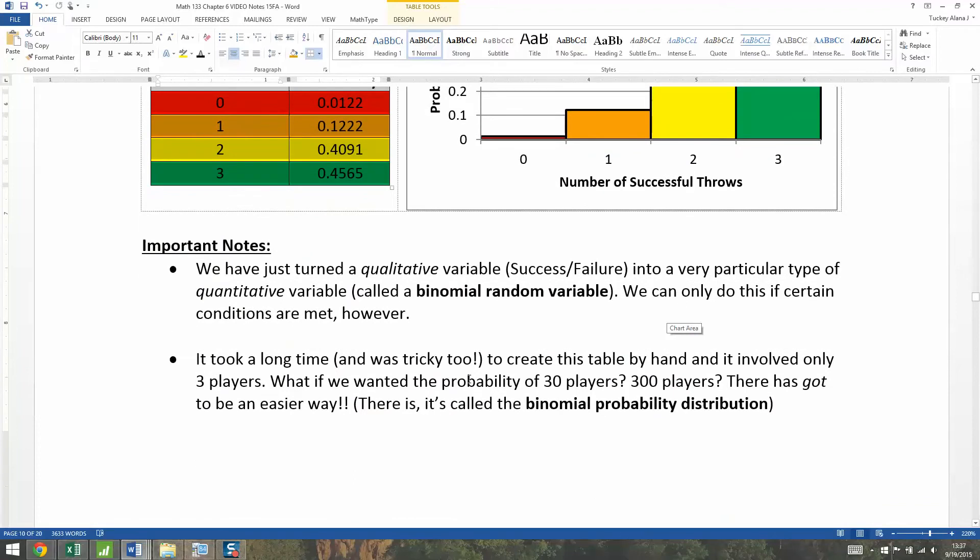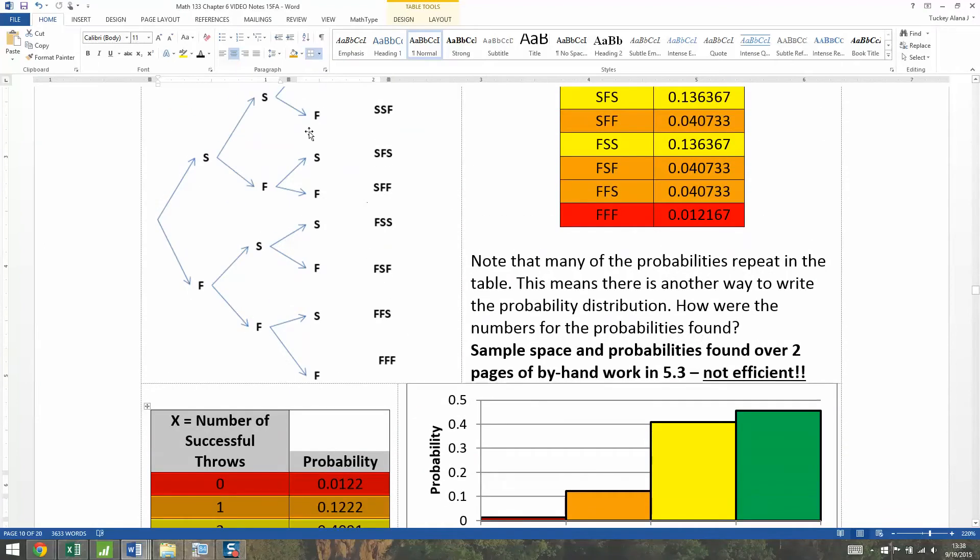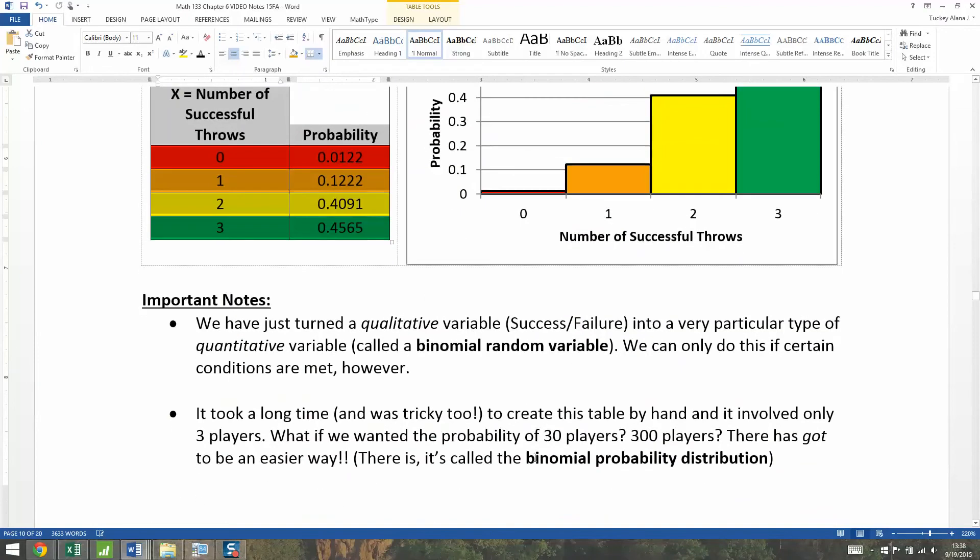There's got to be an easier way, and the answer is there is. It's called the binomial probability distribution and it's in your calculator. You're going to be able to use your calculator to come up with those probability numbers much more quickly than you could get just doing this long hand form where you had to come up with a tree diagram first. Trust me, you do not want to make a tree diagram for 30 players, let alone 300 players. But the binomial distribution from your calculator will work even with those very large numbers, and it's extremely quick.